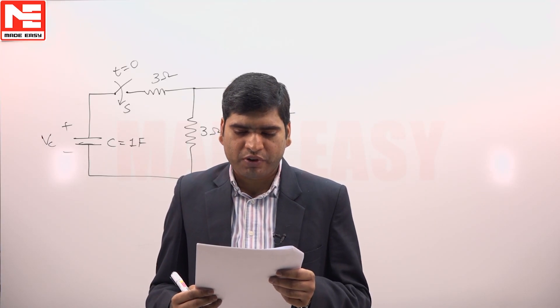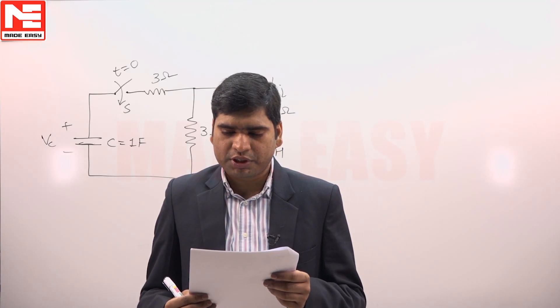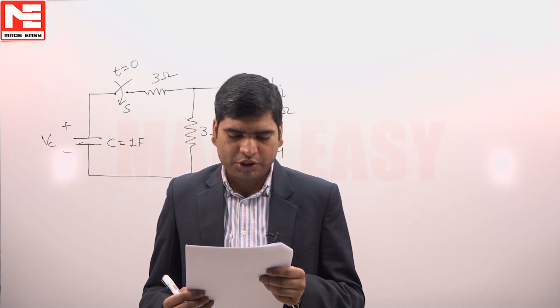In the circuit shown below, the switch S is open for a long time and the initial values of voltage Vc and current I are given by 6 volts and 0 amperes.